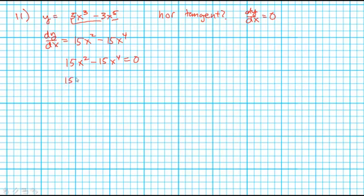Both of these terms have a 15. Both of them have x squared. So I end up with 1 when I factor that out from the first term, and I end up with an x squared when I factor out the second term.